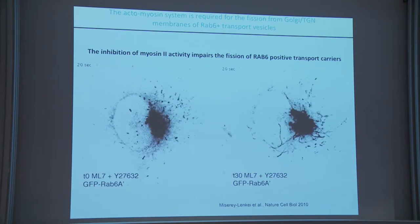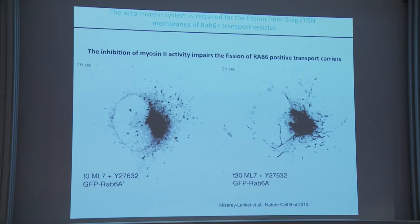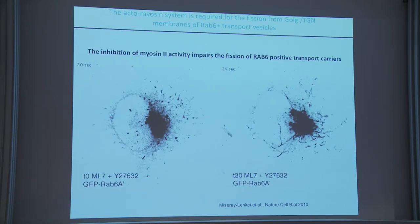It has been shown — we showed this in vitro a long time ago with Patricia — that if you pull on a membrane with molecular motors along microtubules, and if you inhibit the fission event, you see the formation of membrane tubes. Now we have tried to understand in further detail how this might work.